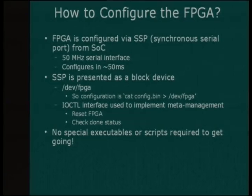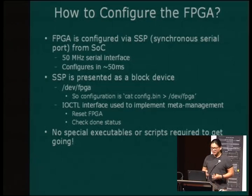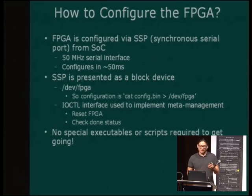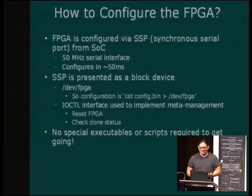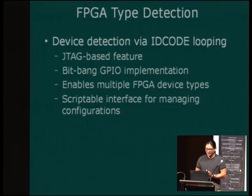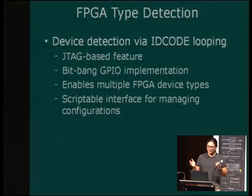People often ask how you configure an FPGA in a system. FPGAs are reconfigurable pieces of hardware. We used a synchronous field port from the SOC, so we can configure it in 50 milliseconds. The FPGA is presented as a block device — it just looks like /dev/fpga. You just cat your configuration file to /dev/fpga and you're done. Use some IOCTLs to reset the FPGA or check the done status. No special executables or scripts required. Because FPGAs have many pin-compatible variants in a single slot, we also use a set of GPIOs with JTAG-based ID code looping — we wiggle the JTAG lines and see what ID codes come back, allowing us to automatically select the right FPGA type based on the customer build.